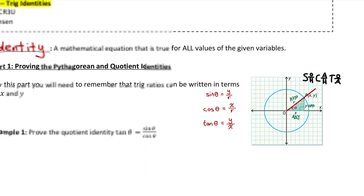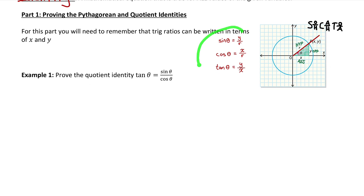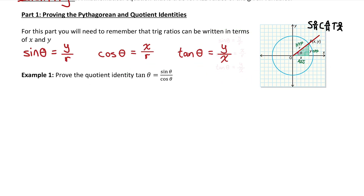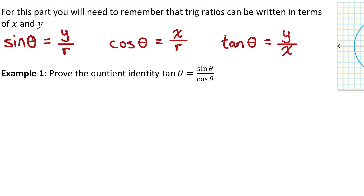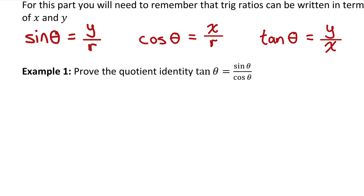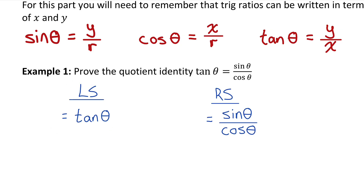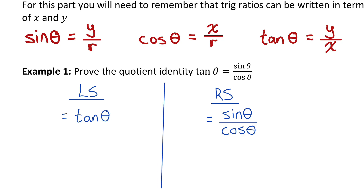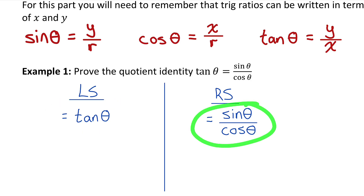Now let's see if we can prove our first fundamental trig identity. Let me rearrange these and make them bigger so I can reference them. We'll try to prove that tan theta equals sine theta over cos theta is an identity, meaning we have to prove it's true for all values of theta. The general process for proving an identity is to separate the equation into a left side and a right side. I'll draw a vertical line between the sides to show that I'm working with them completely separately. We're not allowed to move terms between sides — we're just trying to prove that both sides are the exact same expression.